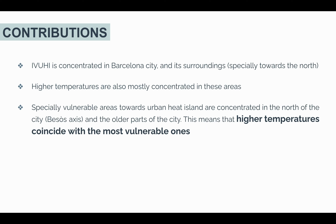We saw that the synthetic index is concentrated in Barcelona city and its surroundings, especially towards the north. Higher temperatures are also mostly concentrated in the same areas. So if specially vulnerable areas towards urban heat island are concentrated in the north of the city, the Besos axis, and other parts of the city, this means that higher temperatures do coincide with the most vulnerable ones. This is the first step — we identified where the problem is, so now we have to act on it.